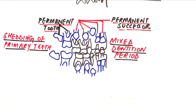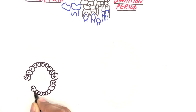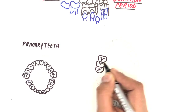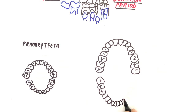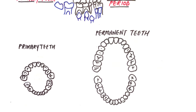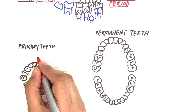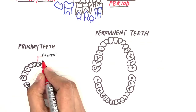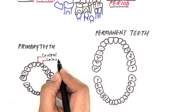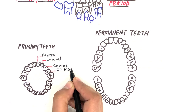Now let's move on to the tooth numbering systems. The two sets of teeth are the primary dentition and the permanent dentition. Other common terms used for primary dentitions are deciduous teeth, milk teeth, and baby teeth. The primary teeth in each jaw are 10 in number. Counting within each quadrant, we have three anterior teeth — the central, lateral, and canine — and only two posterior teeth, which are the first and second molars.